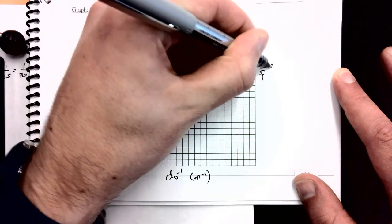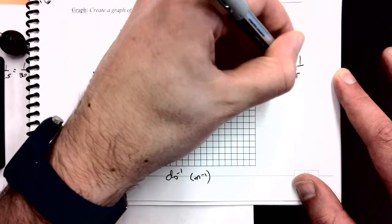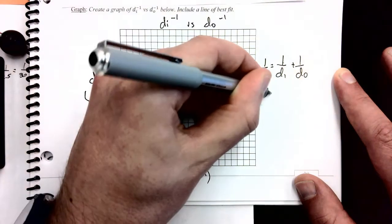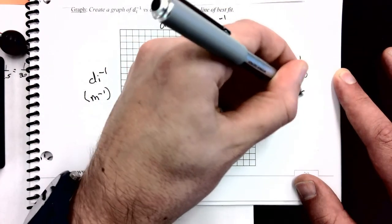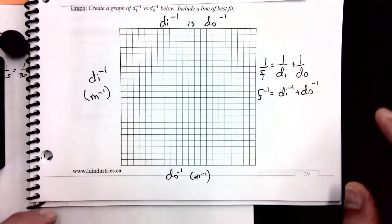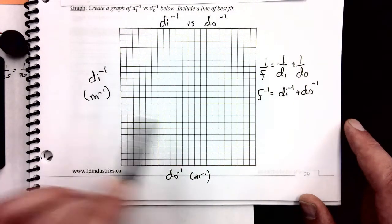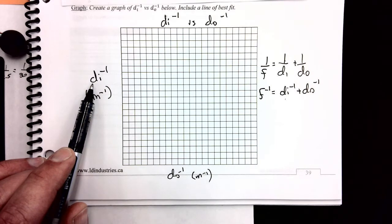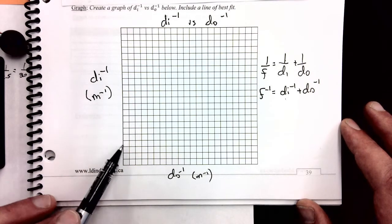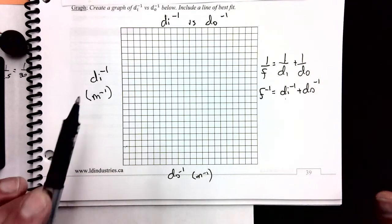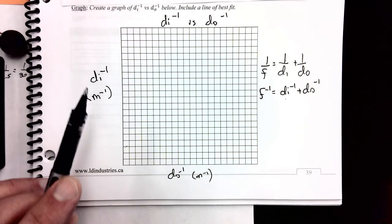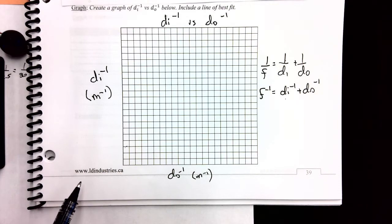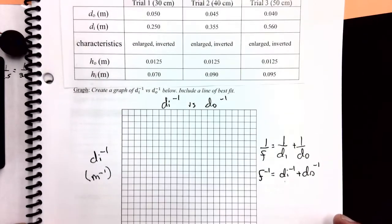It might seem like a totally crazy idea to graph 1 over di and 1 over do until you realize that the formula which relates these variables together actually has in it 1 over di and 1 over do. Another way of writing 1 over is to write it to the power of negative 1. So the start of the graph is taking those variables di and do and graphing their reciprocals — not the actual values. If you graph the actual values you get a curved graph, but graphing the reciprocals gives a straight line, which helps us find the focal length of the lens.